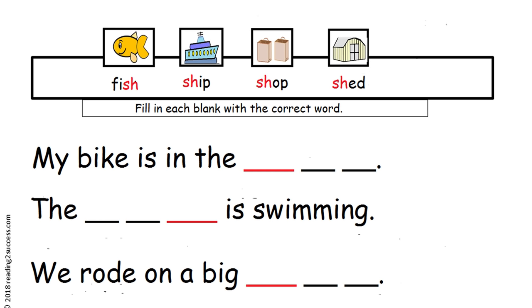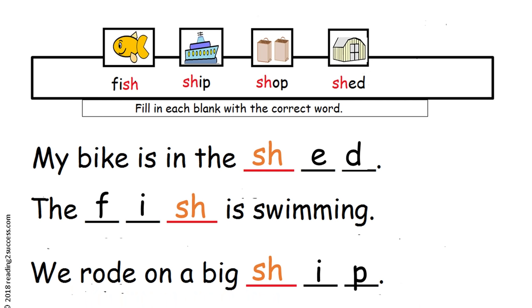And SH should be written on the red line, then the E on the second line, and the D on the third line, so they are still seeing the sounds that the letters represent. And this is a completed example: my bike is in the shed, the fish is swimming, we rode on a big ship.